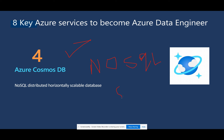Within a Cosmos DB database, we create containers and collections, which are similar to tables in a SQL database. Within the container we store documents or items.